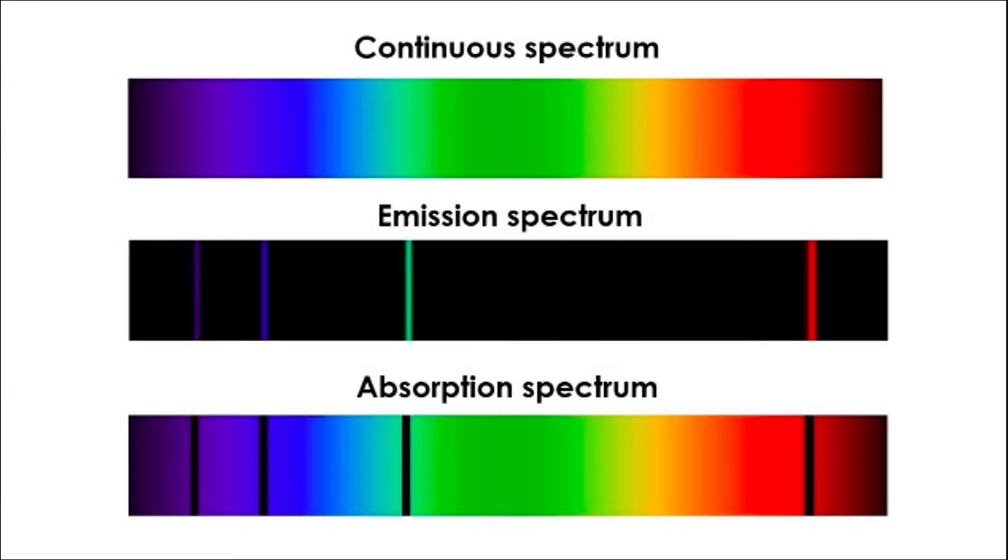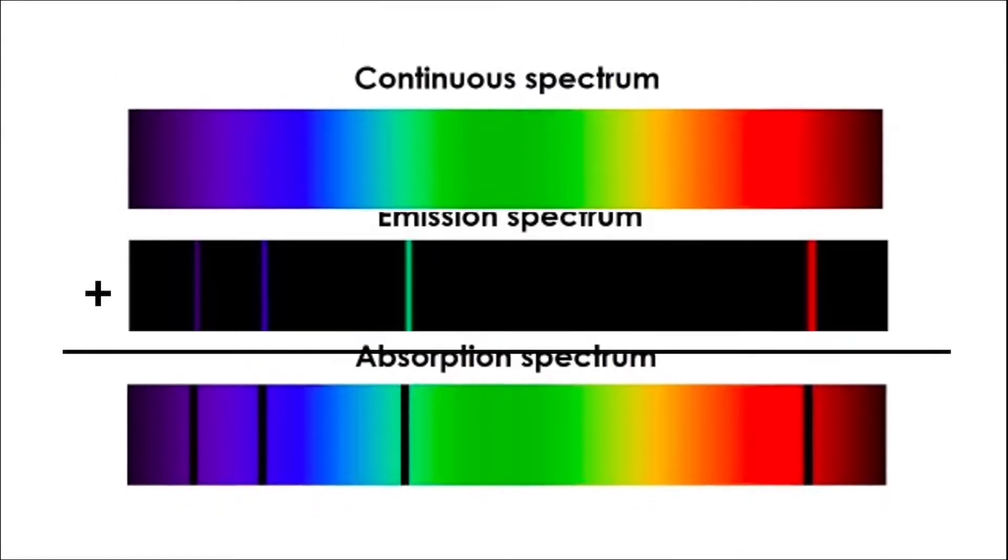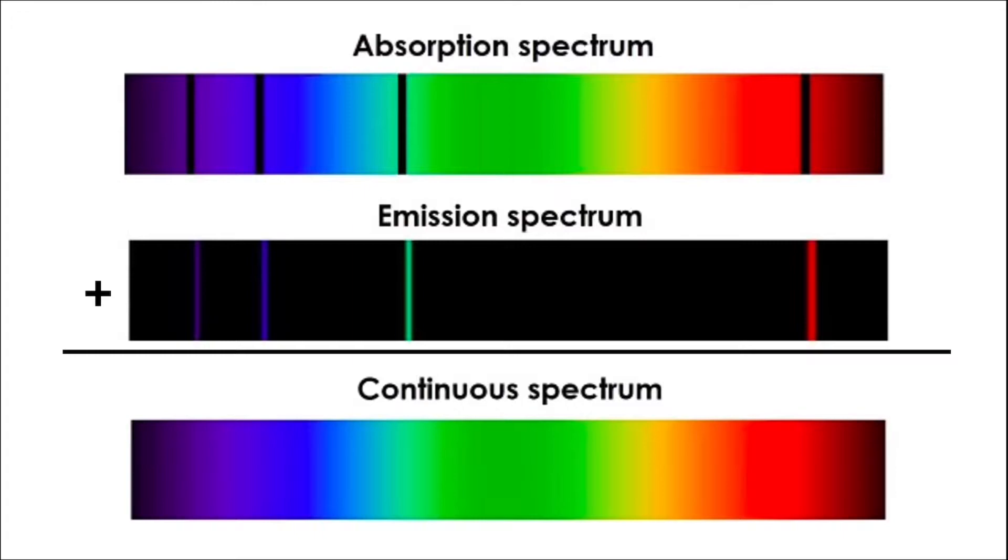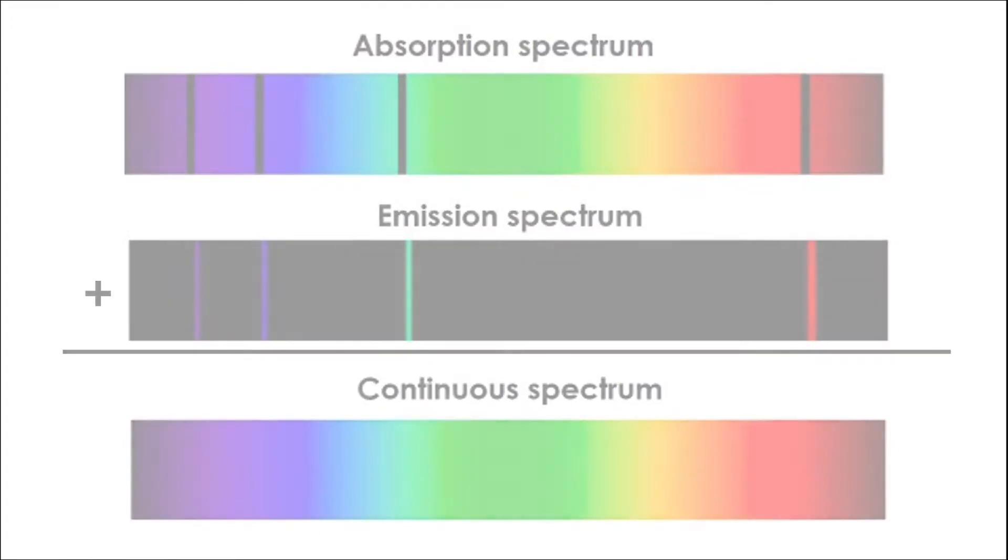Notice that when you add the emission and absorption spectra together, the gaps in the absorption spectrum are filled by the lines in the emission spectrum, resulting in a continuous spectrum. But let's take a closer look at each of these.